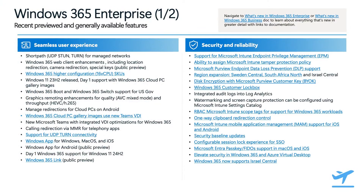Let me give you a highlights tour of our recent and upcoming innovations in Windows 365. Starting with the foundation and first principles of everything we do here at Microsoft: security and reliability. We have recently enhanced our data security capabilities through two new additions. The first is Microsoft Purview endpoint DLP support and disk encryption with Microsoft Purview customer key. These two investments are one more dimension of our integrated security story across the Microsoft stack, which is based on zero trust principles.